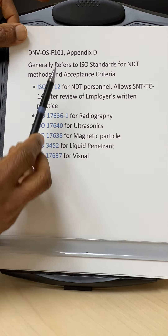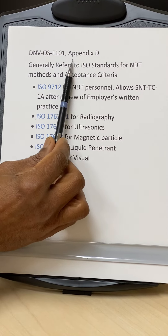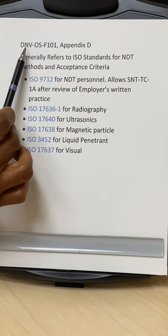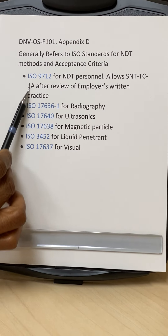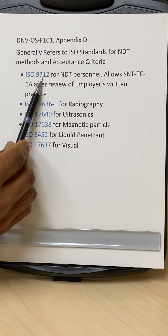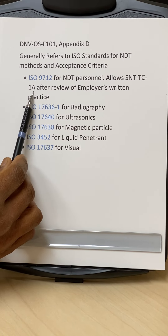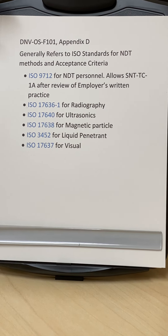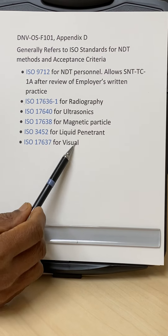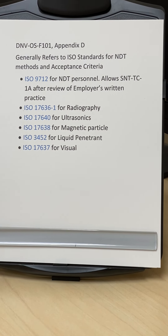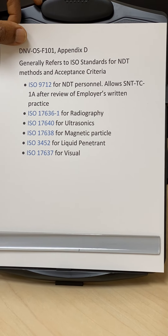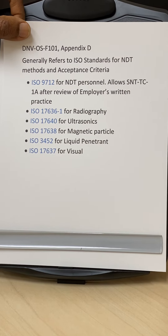For offshore work, the most common code used in the industry is DNV OSF 101. The NDT methods are given in Appendix D of this standard. Since it is a European standard, it refers to ISO standards for NDT methods. For personnel certification it refers to ISO 9712 and ISO 11112, though it does allow Level 2 SNT-TC-1A after review of the employer's written practice. For radiography it refers to ISO 17636-1. You really have to dig into DNV OSF 101 to find all the references.